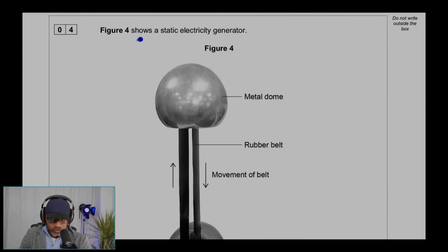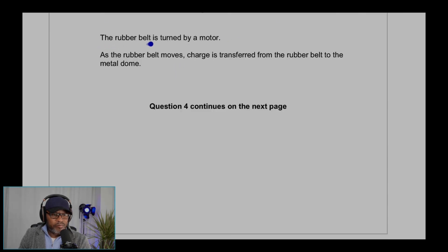Question 4. Figure 4 shows a static electricity generator. The rubber belt is turned by a motor.